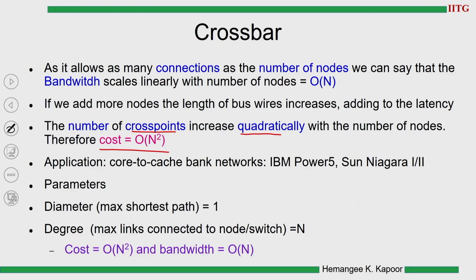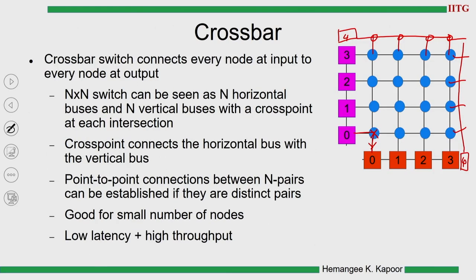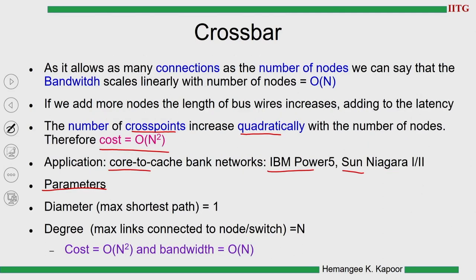The crossbar is used in some implementations for core-to-cache-bank networks and has been used very popularly. What is the diameter? As long as the cross point is programmed correctly, it takes just one path — the diameter is equal to 1. The degree is n. The cost is order n squared, which is more expensive than the bus (order n), but it gives better bandwidth because connections can be established in parallel when sources and destinations are distinct. The bandwidth of the crossbar is order n, whereas the bandwidth of the bus was order 1.